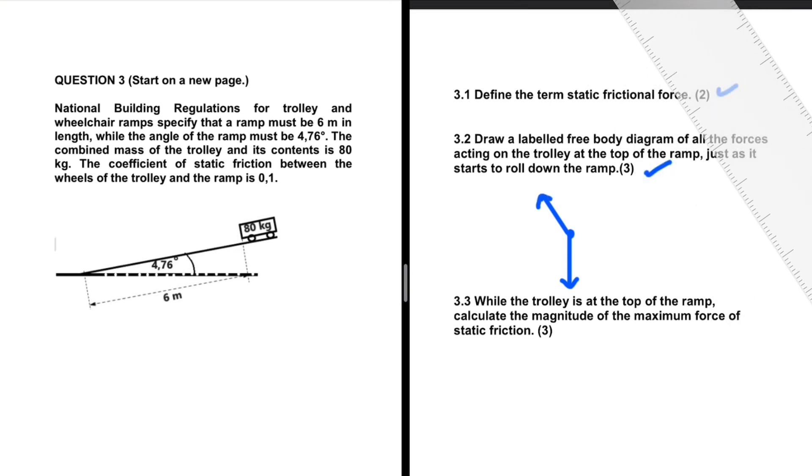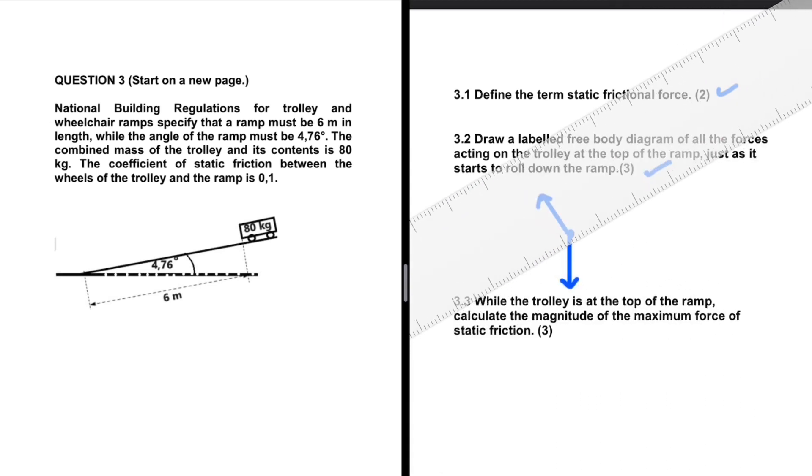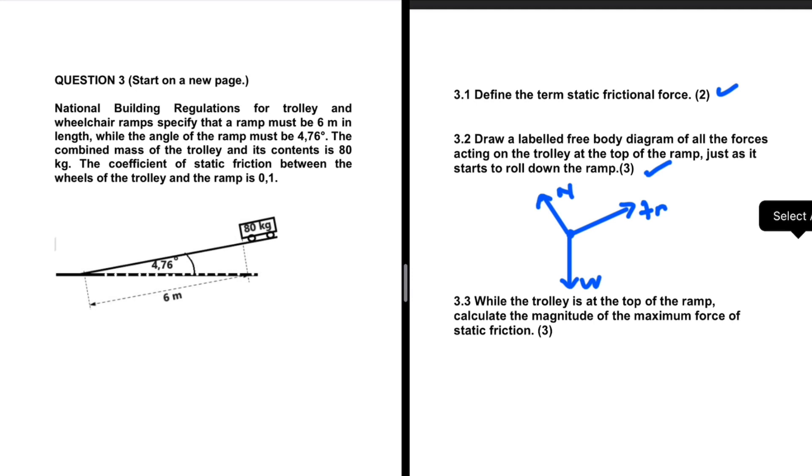It is the labeled free body diagram for all the forces, just as it starts to roll down the ramp. When it rolls down, obviously we have the frictional force in the opposite direction. Maybe we can talk about the frictional force pointing upwards. So let me just label these forces first and then we will address that. We have the weight, the normal force, and you are saying that the frictional force is pointing up the incline. So why are we saying that the frictional force is pointing up the incline? Why is this the case? Let's talk about that.